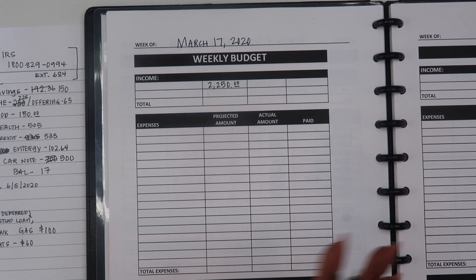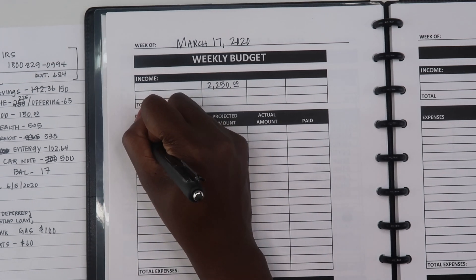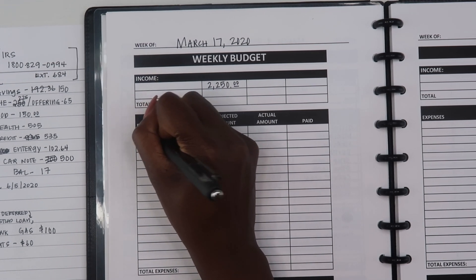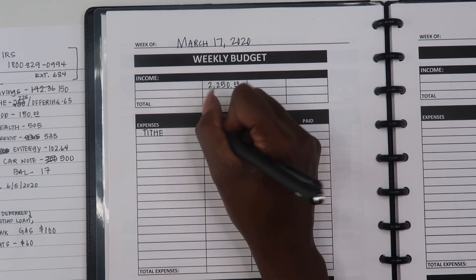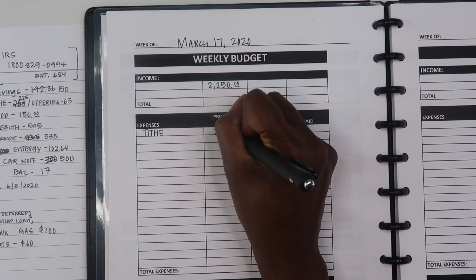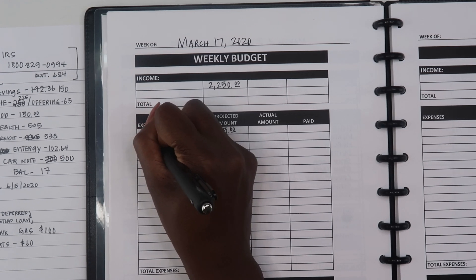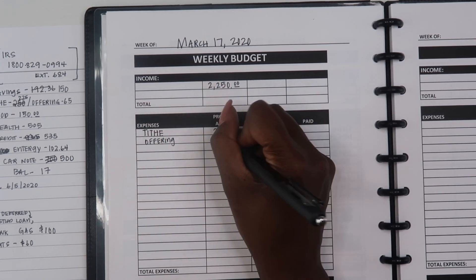Our income hasn't been drastically affected yet but I am expecting it to be affected a little bit in the upcoming weeks. So I do want to set aside some additional savings just to prepare for when that time comes. The first thing that I put on every budget is our tithe and then I will do our offering and then the next thing will be our savings.